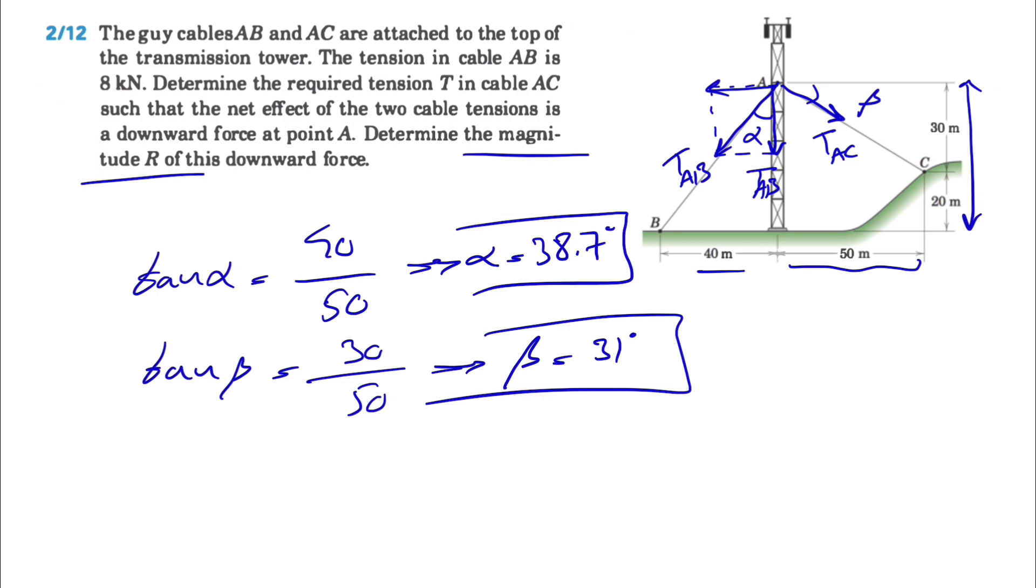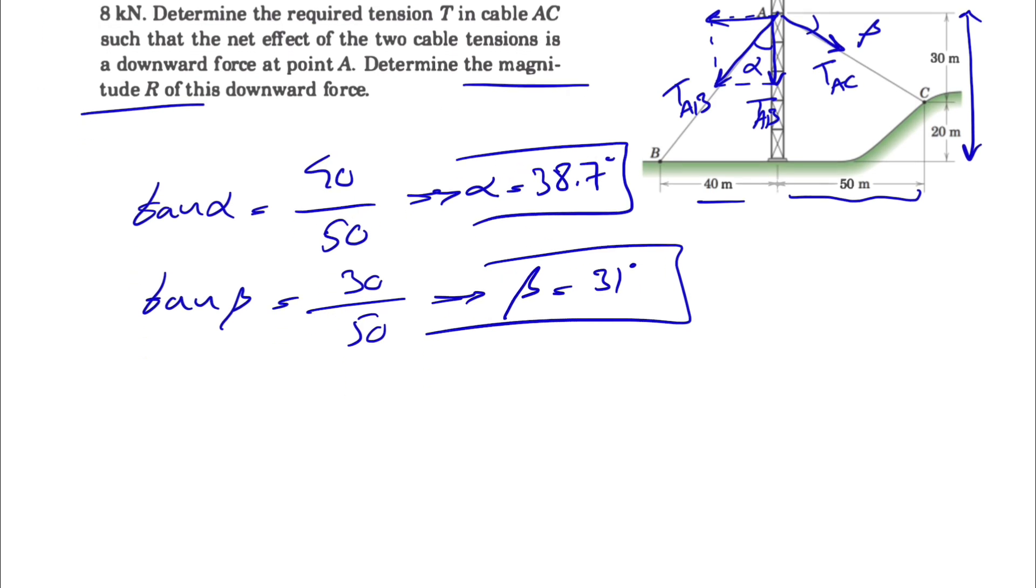Now that we have the angles, it's easy enough to find the X and Y components. Our R only has Y components since it has to be downward. That means Rx, which is the sum of all forces in X, has to be zero.